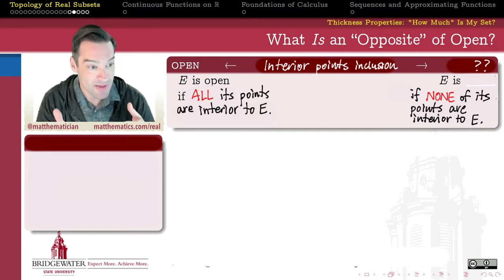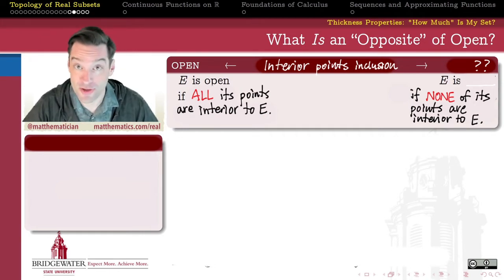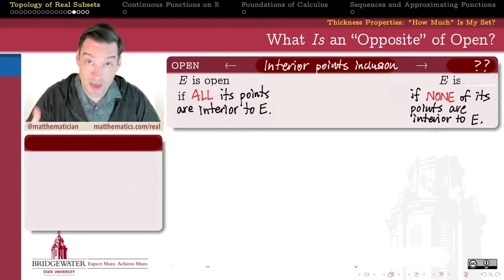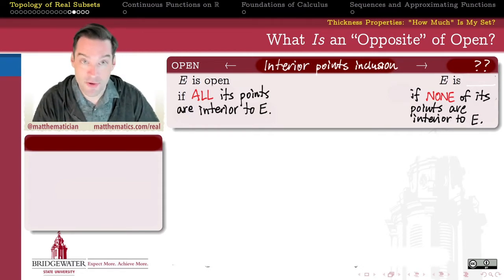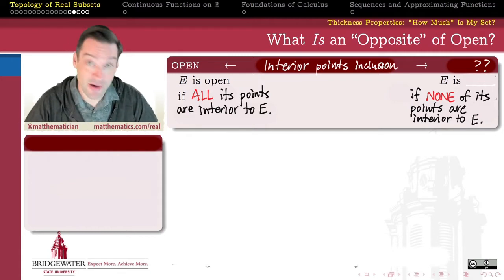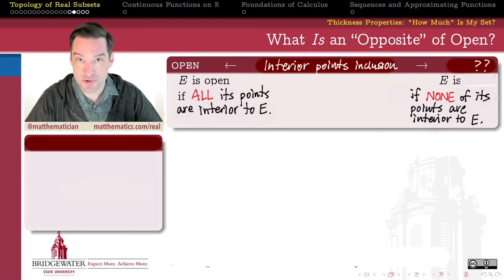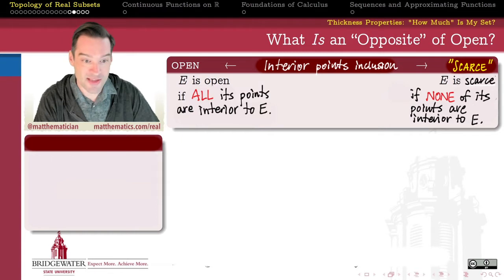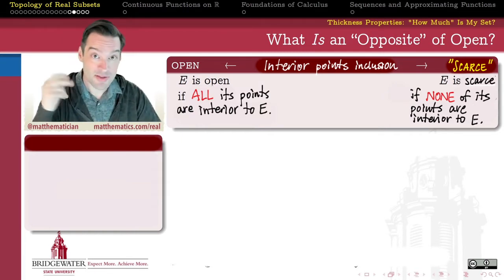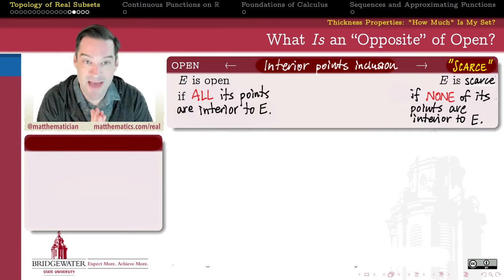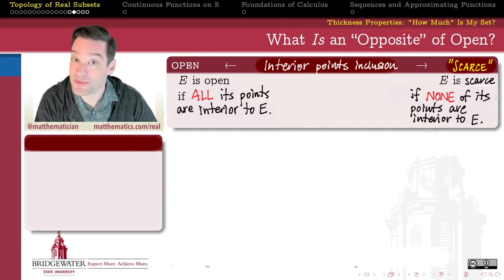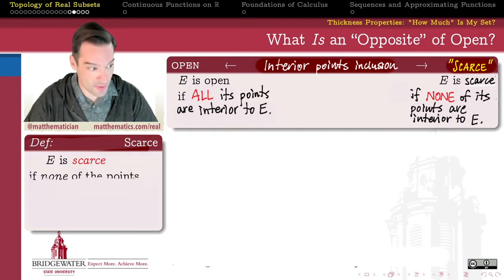At the other end of the spectrum of interiorality are sets that have no interior points at all, and yet which are still not empty. One example is a discrete set, like the set of integers as a subset of the real line — none of those points are interior because they're all isolated. We're going to call the sets at the other end of the spectrum that have no interior points 'scarce.' There are no open intervals at all contained within a scarce set; none of its points are interior points. The interior of a scarce set is the empty set.